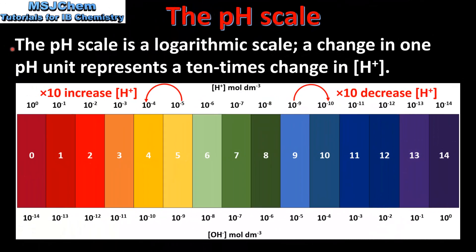The pH scale is a logarithmic scale. A change in 1 pH unit represents a 10 times change in hydrogen ion concentration. For example, a decrease in pH from 5 to 4 represents a 10 times increase in hydrogen ion concentration.